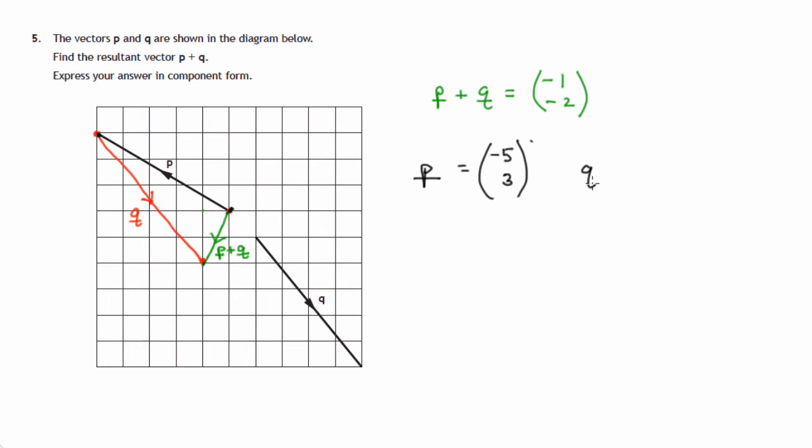Let's do a similar analysis of vector Q. We start off here, we finish there. So we've gone 4 to the right and 5 down. 4 to the right in the x direction, 5 down, negative 5 in the y direction. So these are the two components of vector Q.